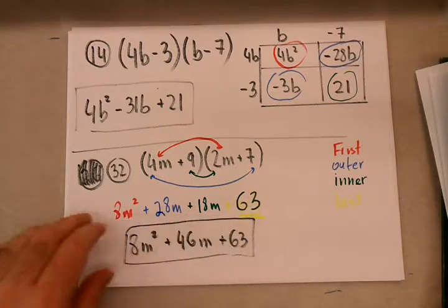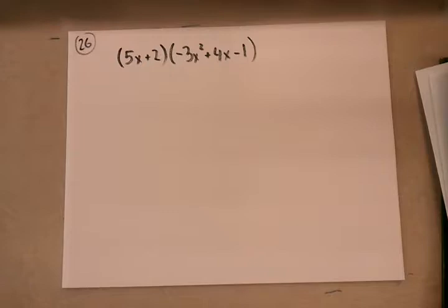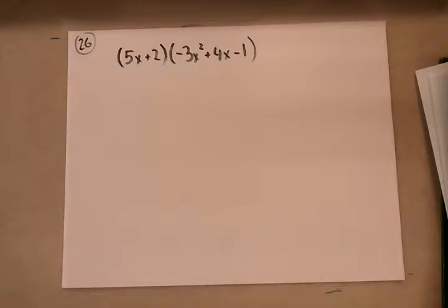Now I'm going to backpedal and do number 26. This is a binomial times a trinomial, and I can use the box method, table method — whatever you like to call it — to do this problem. But I'm going to show you another way as well, in case it's more comfortable. I'll do number 26 both ways. This first method is the distribution method, similar to FOIL but because it's no longer two binomials, the FOIL terminology doesn't quite apply.